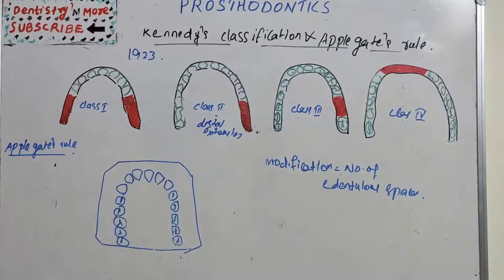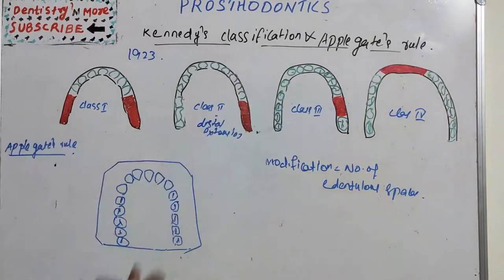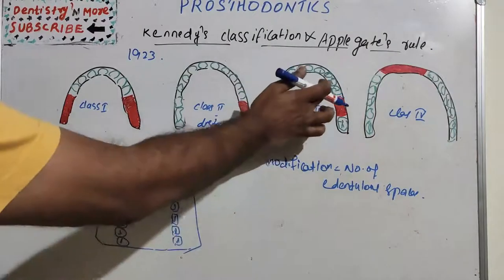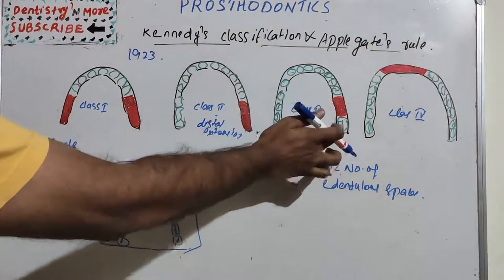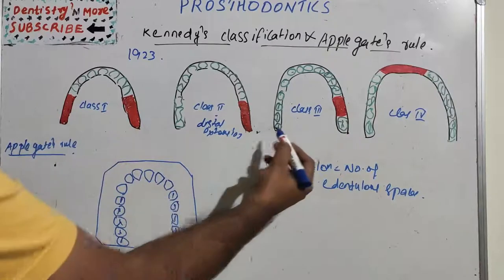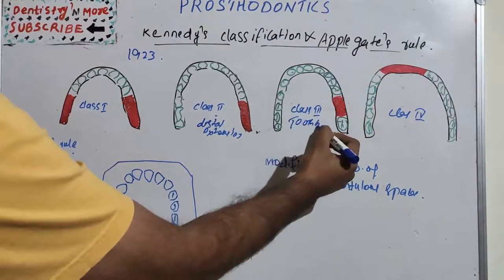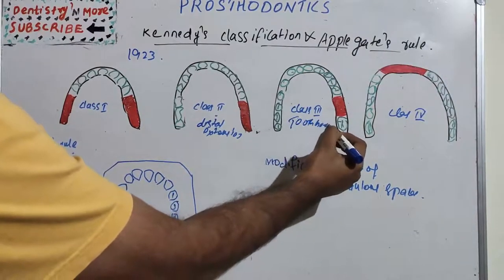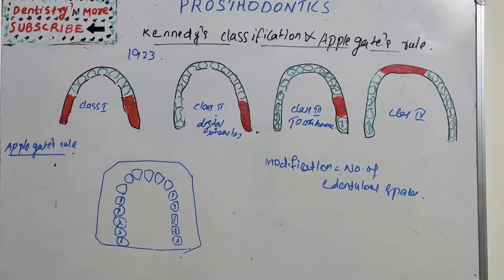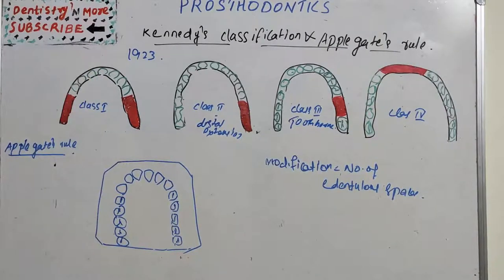Class 3 is a unilateral edentulous area with natural teeth both anterior and posterior to it. It is also known as tooth-borne, because it is supported by the remaining natural teeth only.